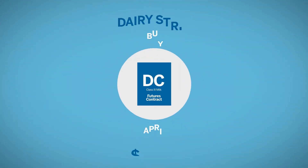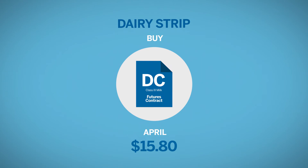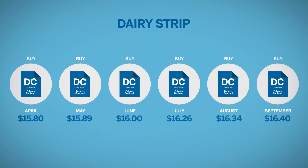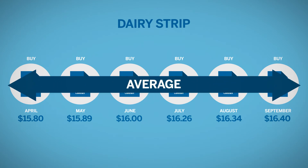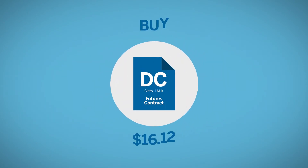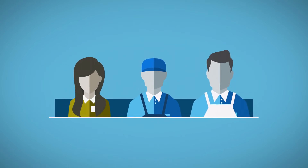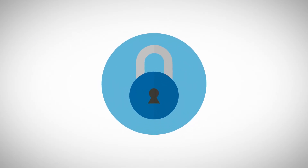A dairy strip is the purchase or sale of a series of dairy futures contracts, representing up to 18 consecutive months along the forward curve as a single transaction. The price of the strip will be the average of the leg prices. Because dairy strips are transacted at a single price, they eliminate the necessity of entering multiple orders into the individual contracts and risking the possibility that some of the legs may go unfilled due to movement in the market before all legs are completed. A dairy strip facilitates planning operations and cash flows for producers and manufacturers by allowing them to lock in a fixed price over a defined period.